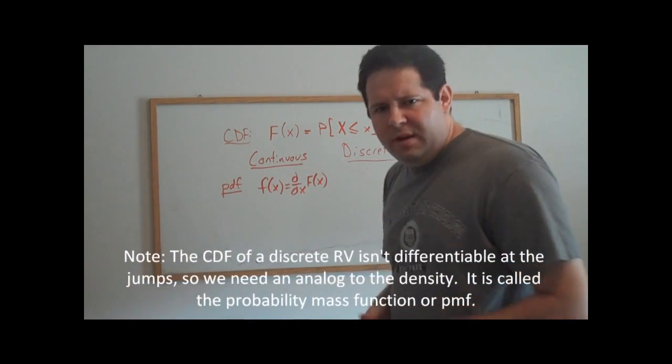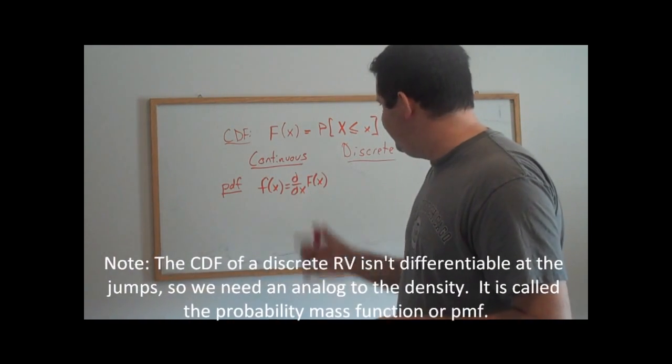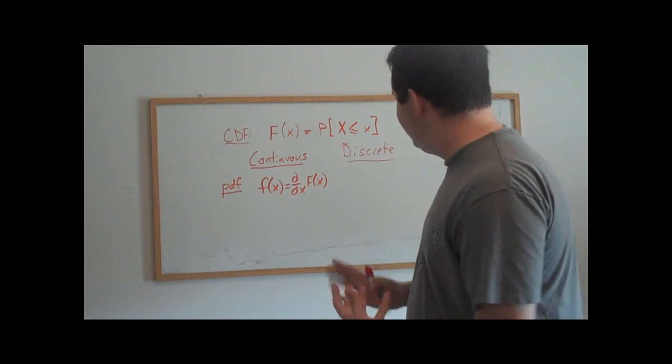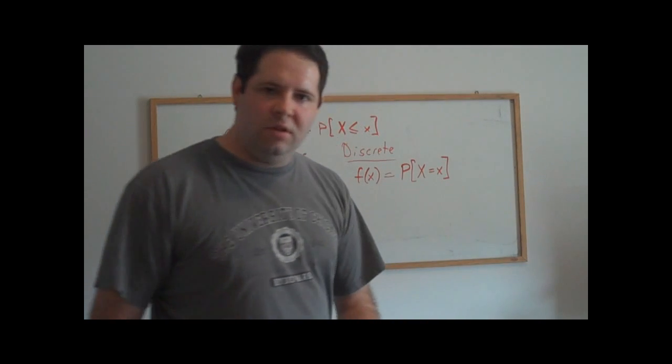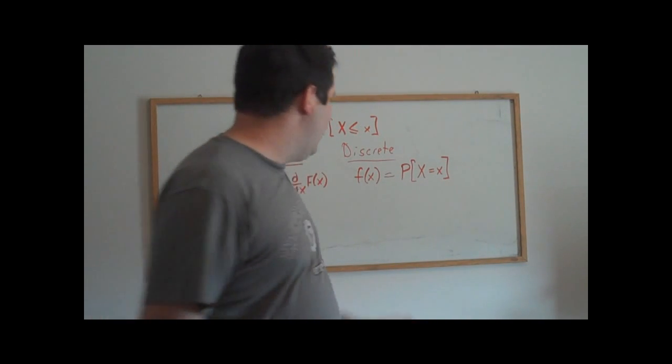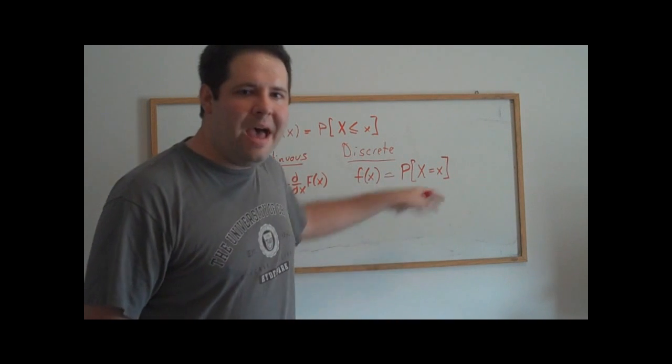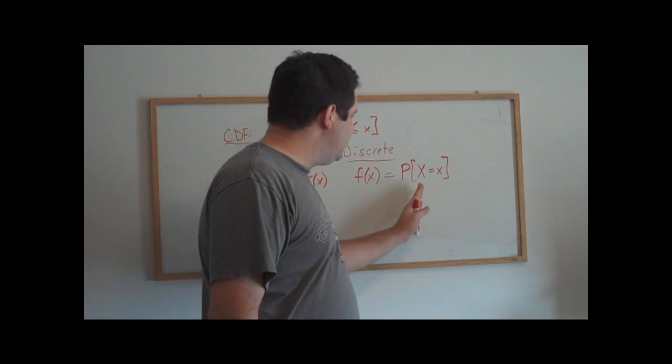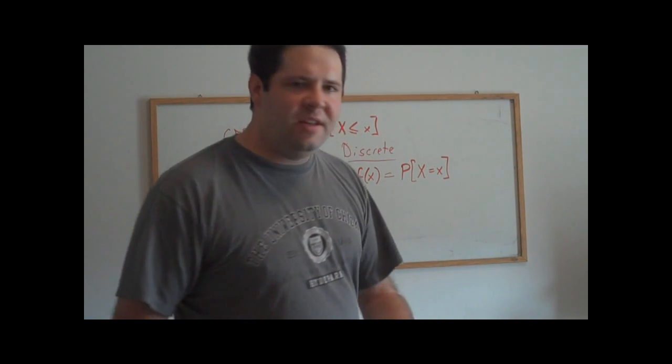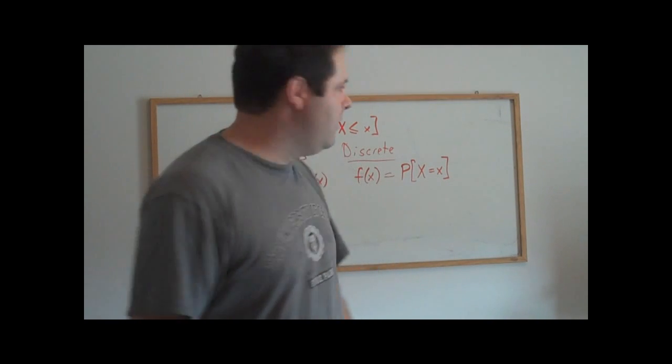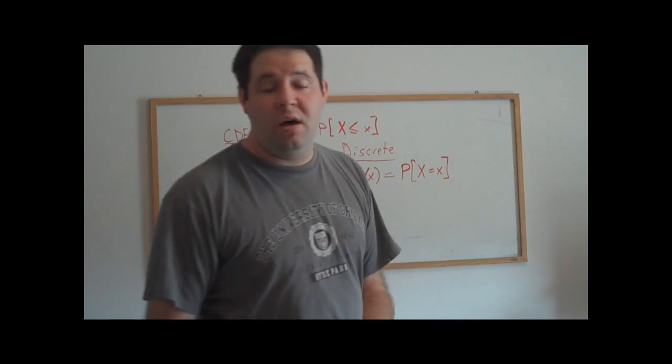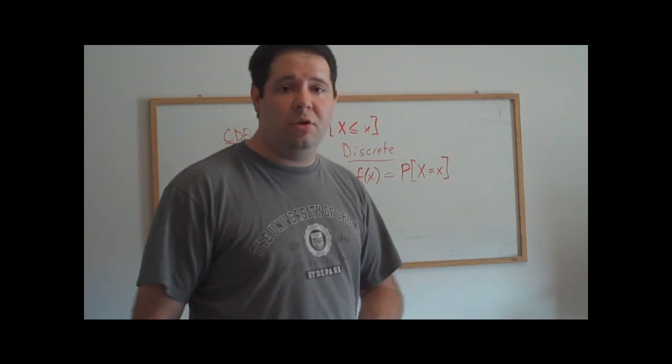Now, with the discrete random variable, we can do something that's sort of like a rate of change. So if you were to look at the counterpart of the density, this is called the mass function. This is going to be a function that is defined as a positive number on the support of this discrete random variable.